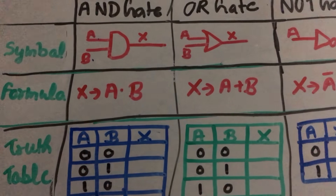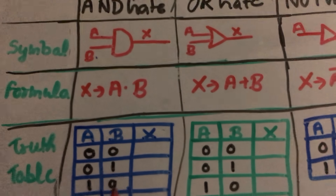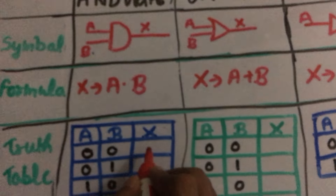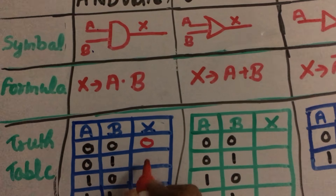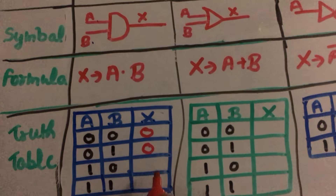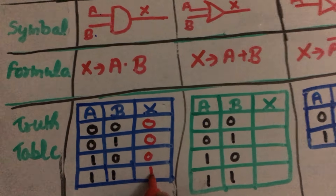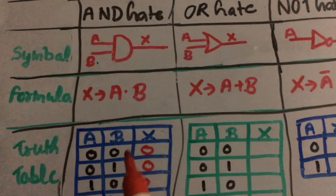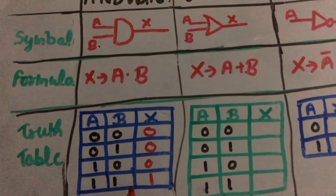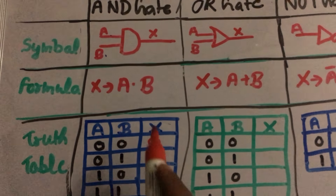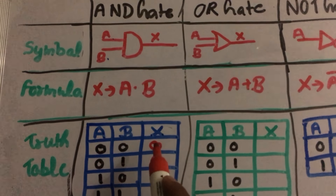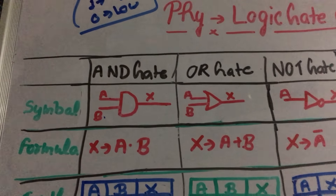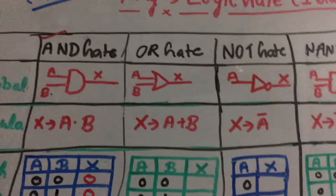For the AND gate truth table, A and B are the two inputs and X is the output. The results are: 0·0 = 0, 0·1 = 0, 1·0 = 0, and 1·1 = 1. This means in the AND gate, if both inputs are high then the output will be high; otherwise the output will be low.